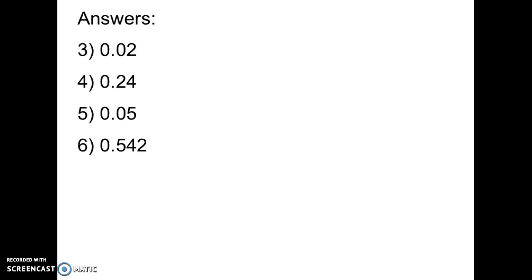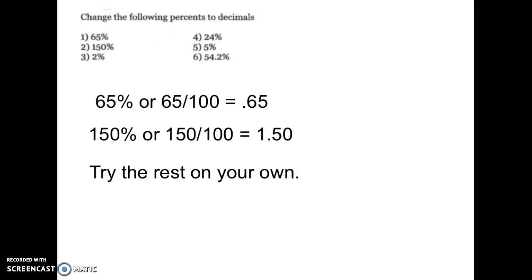54.2% becomes 0.542, or 542 thousandths. That's how you change a percent to a decimal — you move the decimal point two places to the left. If you think back to what we learned about fractions, 65 over 100 means divide on that fractional line, and when we divide by 100 we move the decimal point two places to the left.